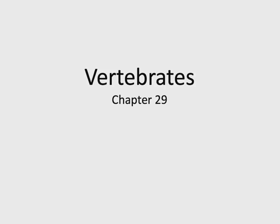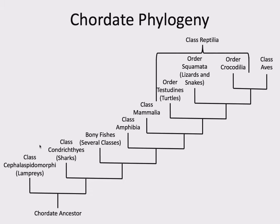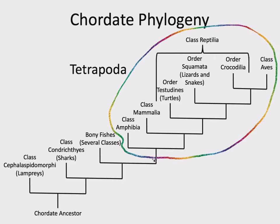Hello, BISC 132. This is the beginning of Recorded Lecture 4.1, continuing on with vertebrates. Last time we just got started on this chapter enough to talk about fishes. Now we're going to turn our attention to everything else. Everything else can be defined by an evolutionary innovation that the ancestor to amphibians, mammals, reptiles, and birds had — the evolution of four limbs.